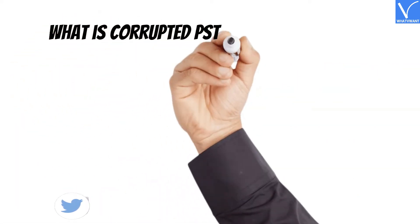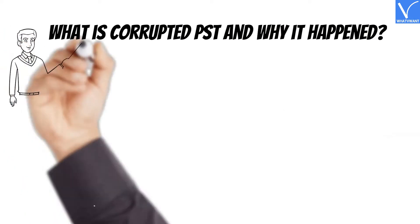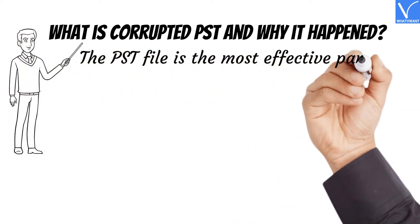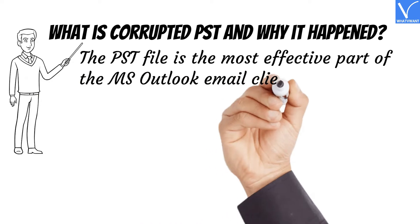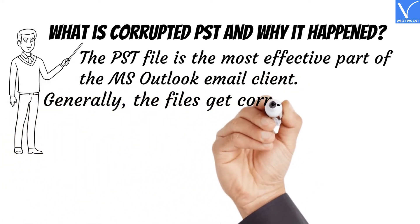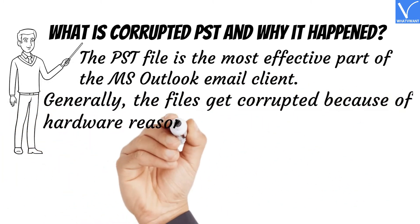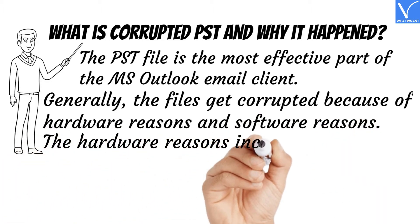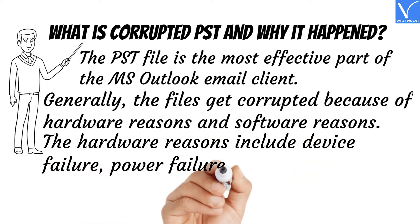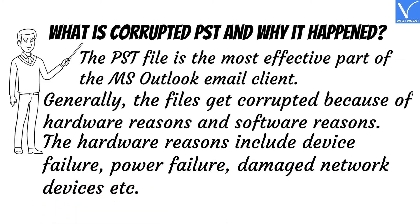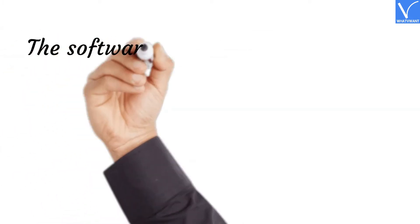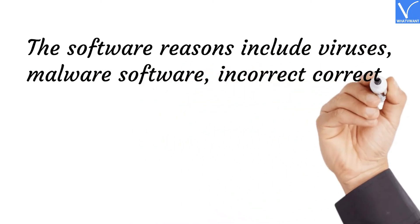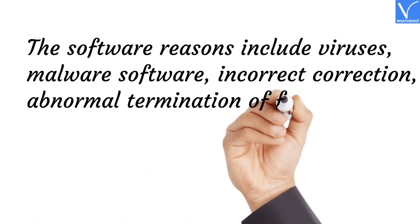First, you need to know what is a corrupted PST and why it happened. The PST file is the most effective part of the MS Outlook email client. Generally, the files get corrupted because of hardware reasons and software reasons. The hardware reasons include device failure, power failure, damaged network devices, etc. The software reasons include viruses, malware software, incorrect connection, abnormal termination of files, etc.